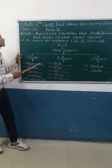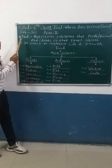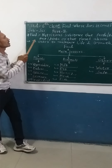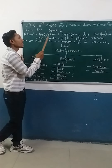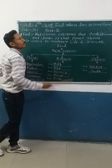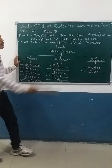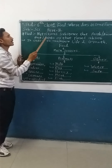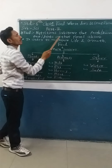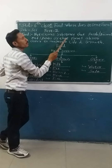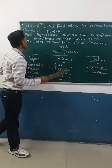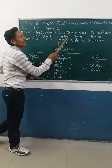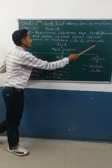First, what is food? Food is a nutritional substance that people or animals eat or drink, or that plants absorb, in order to maintain life and growth.